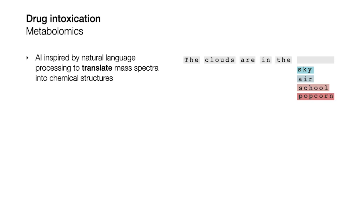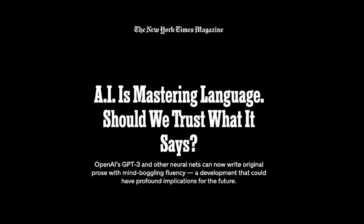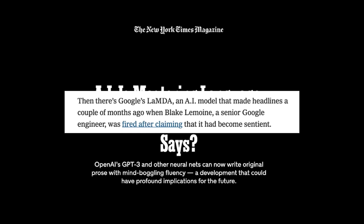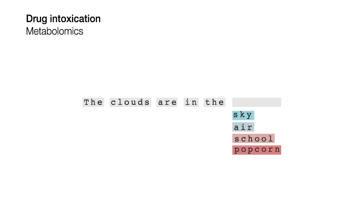Our idea was to take AI tools developed for human language and apply them to textual representations of chemical structures using a format called SMILES, which has been around since the 1980s. These AI tools for human language have been in the news lately with headlines talking about how they've mastered human language, and even questions about whether they've become sentient. But for all this hype, the core concept behind how these models work is surprisingly simple: the basic premise of a language model is to learn to predict what the next word in a sentence is going to be based on the ones that have come before.